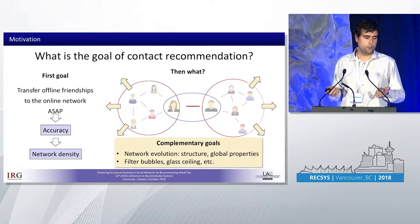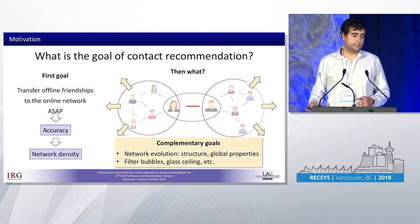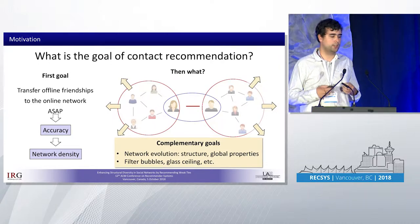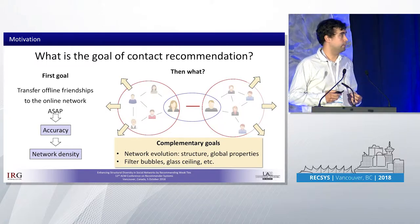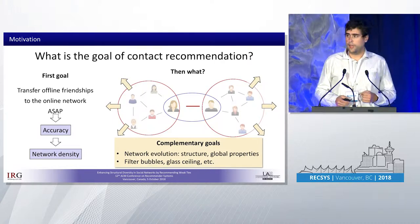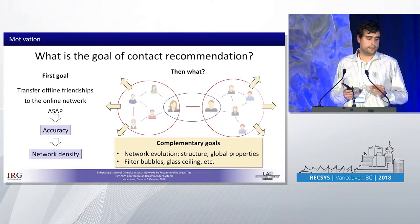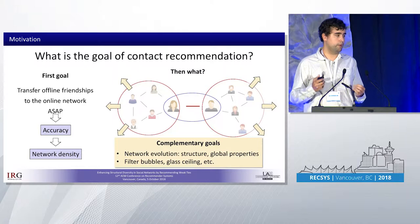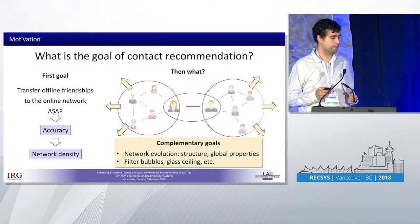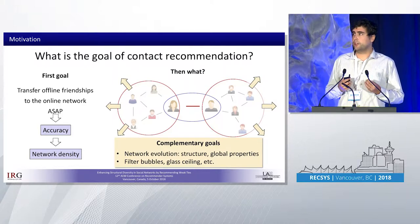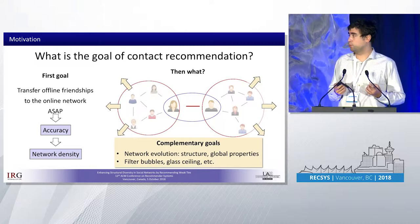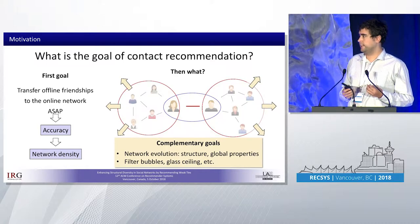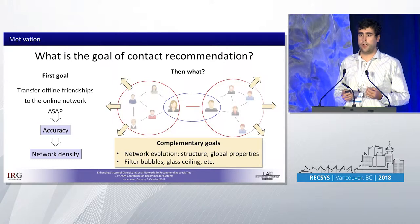However, is that just it or is there something else? In social networks, users are not isolated. They are constantly exchanging information among them, interacting with each other. So each time a link is created between users, it does not only affect the users involved in the link, but also the local environment and even further. So as contact recommendation is one of the main tools for creating links in social networks, it is a strong factor on how the network and its properties evolve.